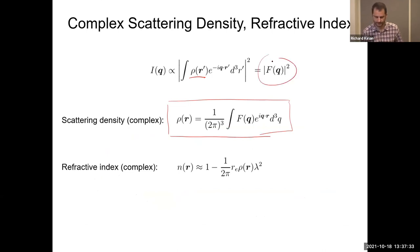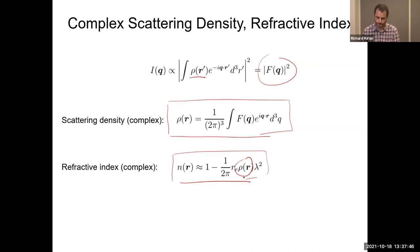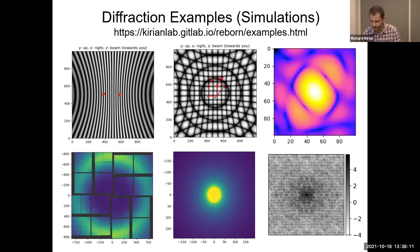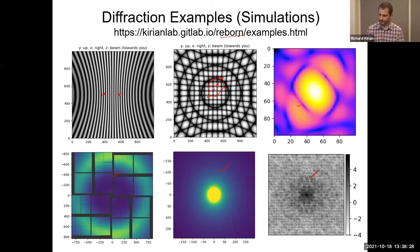Generally, we can define the scattering density as the inverse Fourier transform of the form factor — not just an electron density but a complex scattering density accommodating dispersion corrections. This can also be related to the refractive index, which is sometimes what you find in lookup tables. Here are some examples of diffraction patterns: interference from two points, a collection of four points in a cube, a lysozyme molecule, diffraction from water, from gas, and Joe's simulation of a crystal diffraction pattern from a tiny finite crystal. These are all simulated with the reborn package.